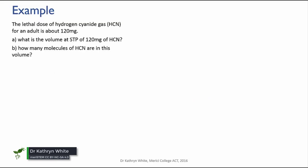The lethal dose of hydrogen cyanide gas, which has the formula HCN, for an adult is about 120 milligrams. First of all, I want to know what's the volume at STP of 120 milligrams of HCN, and then we'll work out how many molecules of HCN are in this volume.